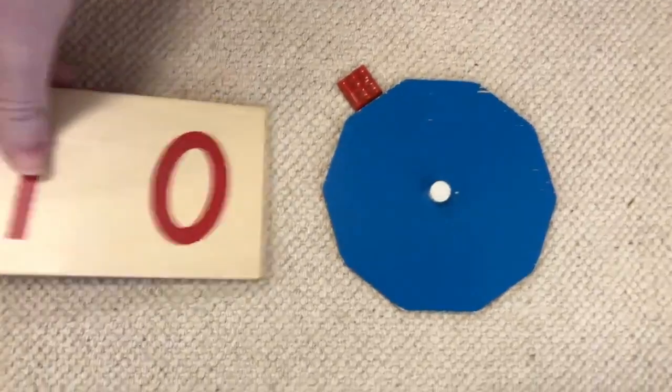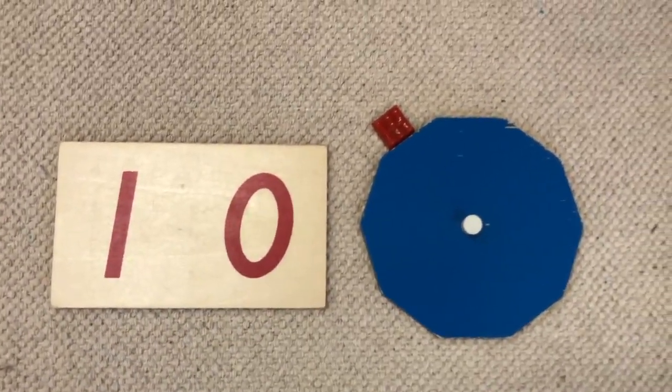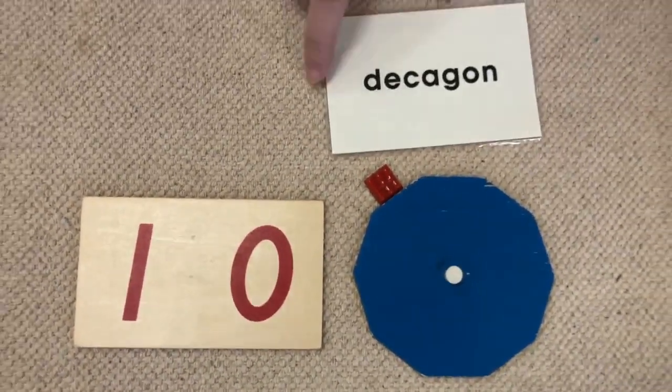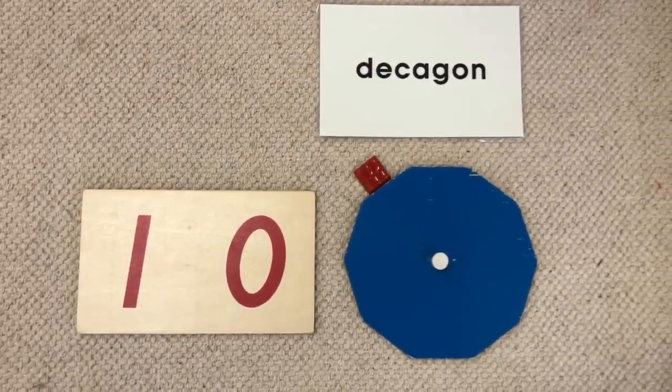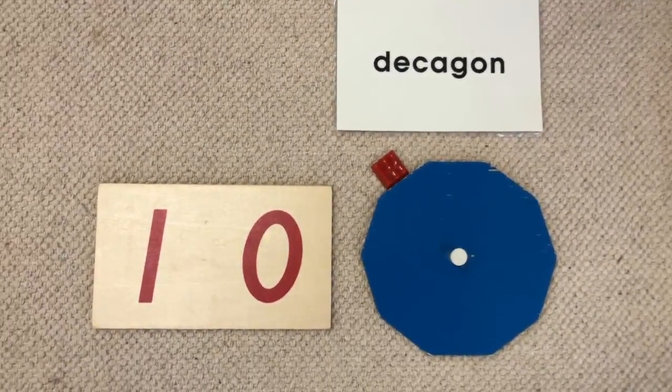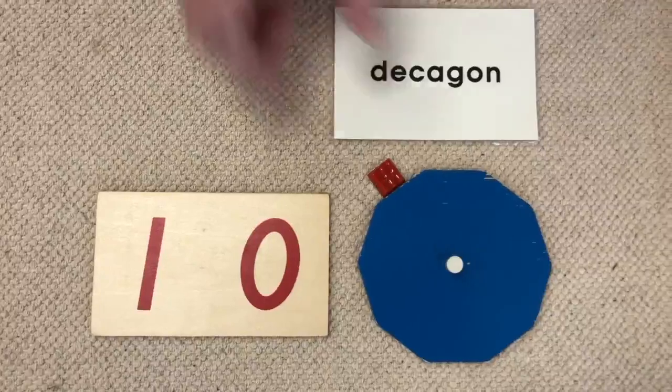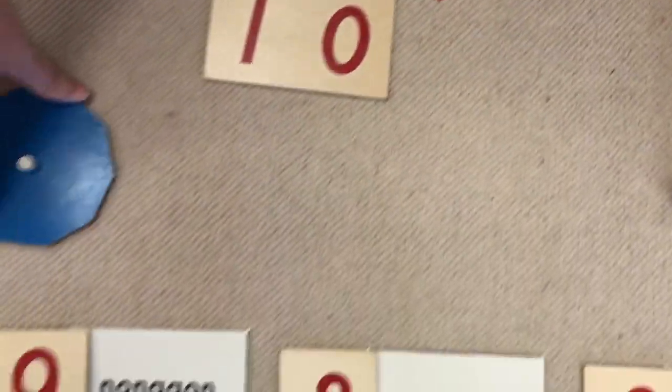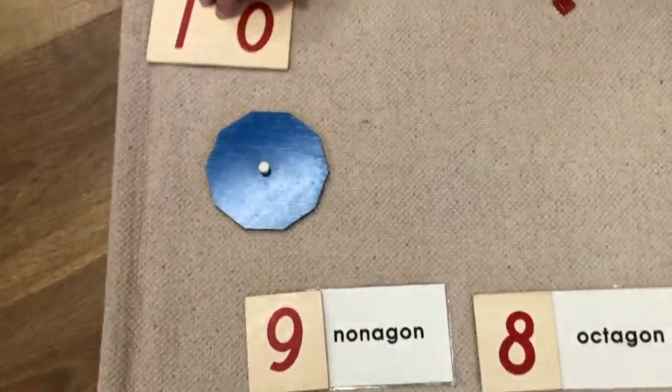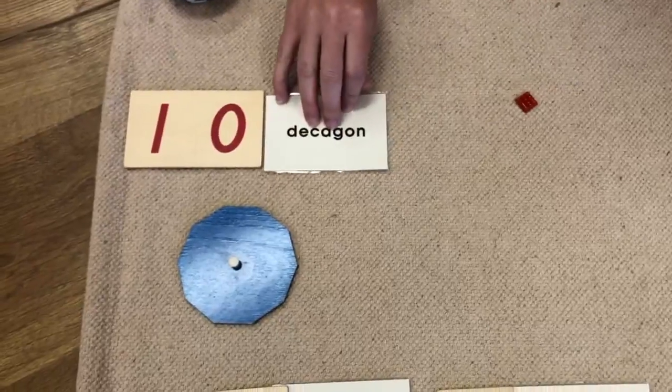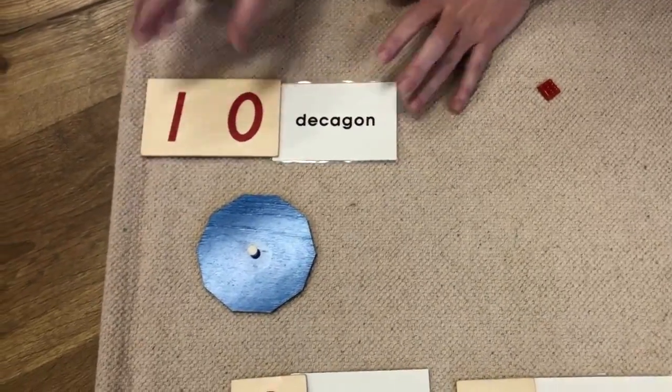A ten-sided polygon is called a decagon. Decagon. Let's put the ten-sided decagon right here. He has to have his own space. Our decagon label, the number ten.